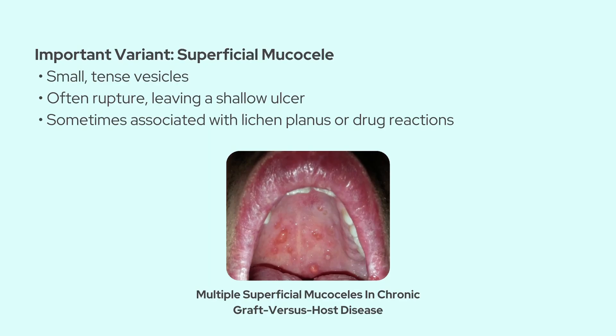Let's mention an interesting variant — the superficial mucocele — which can sometimes show up on the soft palate, retromolar area, or the posterior buccal mucosa. These tend to present as single or multiple tense vesicles, usually between one and four millimeters in diameter. They can even be associated with conditions like lichen planus, lichenoid drug reactions, or chronic graft-versus-host disease, which is something you'll definitely want to keep in mind. These lesions often rupture spontaneously, leaving behind a shallow, painful ulcer that usually heals up within a few days.